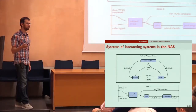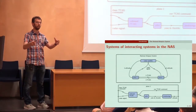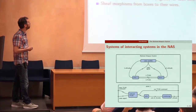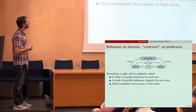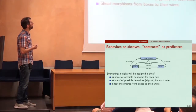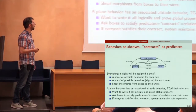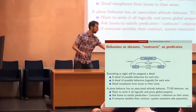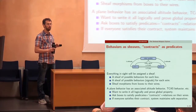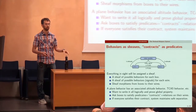In the end, everything in sight will be assigned a sheaf — a sheaf of possible behaviors for each box, a sheaf of possible behaviors like what kind of signals each wire can carry, sheaf morphisms from the boxes to the wires. A plane has an altitude behavior, a TCAS behavior, and we want to write all of this logically in the internal language of a topos and ask that if the boxes satisfy predicates — properties in this internal language like 'I'm a jet; if you tell me to move up I'll move up' — then the whole system satisfies safe separation.